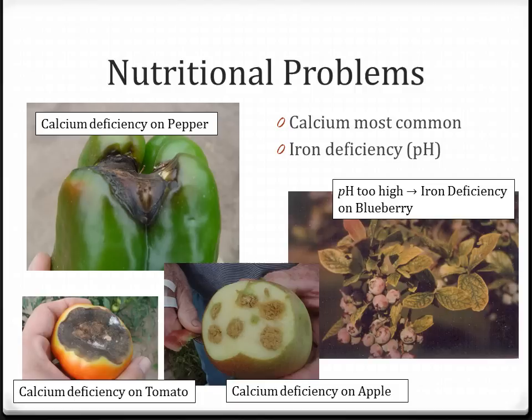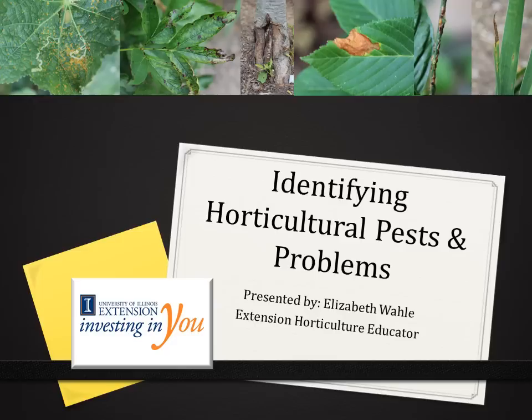Nutritional problems can often look like disease. Here we have calcium deficiency on pepper, tomato, and apple — on pepper and tomato it's called blossom end rot, and on apple it's called cork. There is also a picture of iron deficiency on blueberry that was actually induced by pH being too high. We can address the iron deficiency, but if we don't address the pH problem, the iron deficiency will continually be a problem. Keep in mind it's not always disease — sometimes it is a nutritional disorder that needs to be addressed. Hopefully this series of images will aid you in identifying any current or future problems in your garden. This has been Elizabeth Walley, University of Illinois Extension.